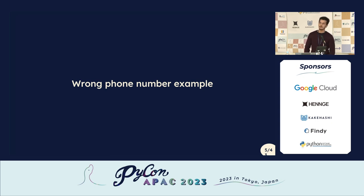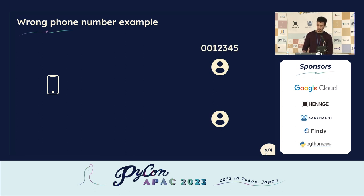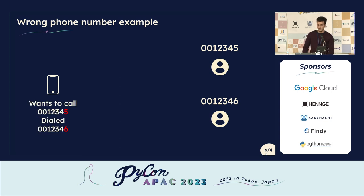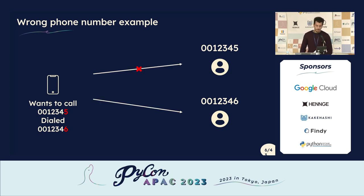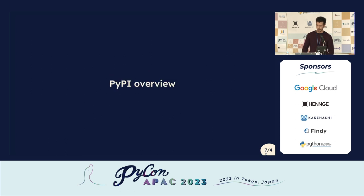Starting with the wrong phone number example — if you read my description of this talk, you saw this example. Suppose we have two parties, side A and side B. Side A is the person with the phone, and side B is the two receivers. The person wants to call number 0012345, but there's another person with a similar number ending in six. Our person wants to call the number ending with five, but actually they dialed the number ending with six — so unintended answers will be received. Please keep this example in mind as we move forward.